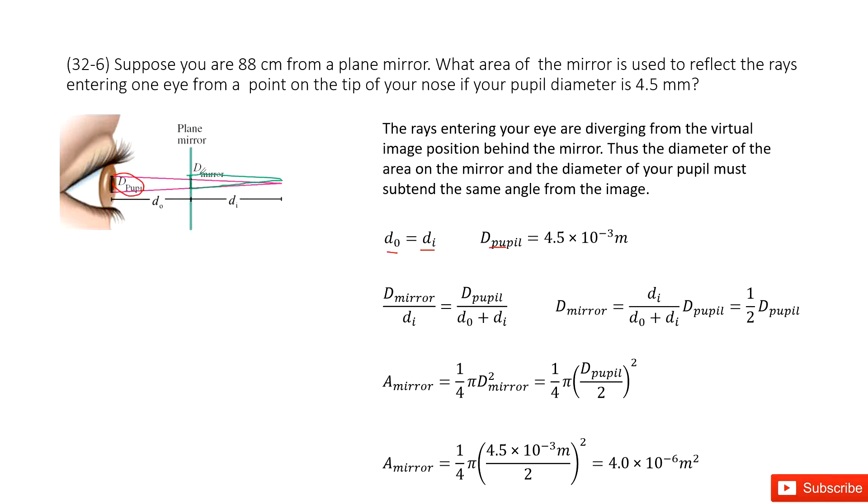In this triangle, we can use the bottom side: D_mirror divided by d_i should equal this one, right? This is another triangle, the larger triangle. So this one is D_pupil divided by d_o plus d_i. This is a similar triangle.